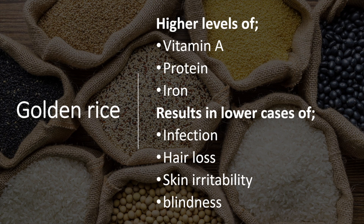Rice is the staple food for more than half of the world's population, and scientists have been able to genetically engineer rice to have higher levels of nutrients such as protein, vitamin A, and iron — named golden rice due to its yellow colour. Golden rice has been modified to produce the compound beta-carotene, which in our bodies converts to vitamin A. Vitamin A deficiency can lead to skin irritation, increased susceptibility to disease, hair loss, and is a large contributor to blindness in developing countries.